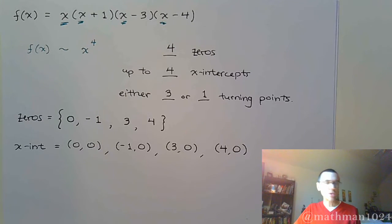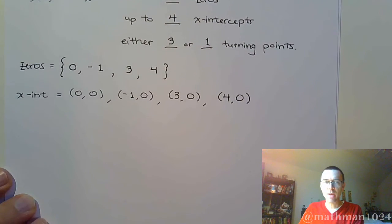Alright, so let's see. The question in the notes. We've identified what the lead term is going to be. We've identified the zeros, the x-intercepts, the possible number of turning points. And so now I want to come up with a quick sketch and then we're going to use Desmos to verify does my sketch look right? Does it kind of match up?